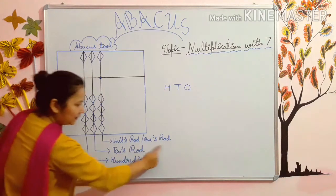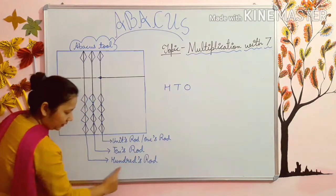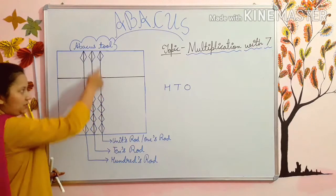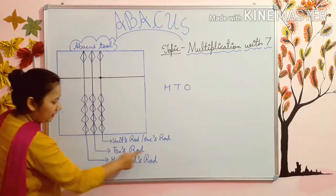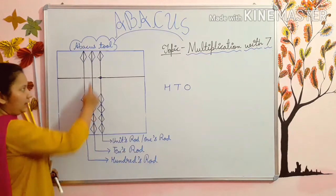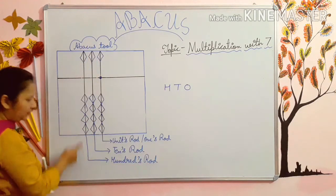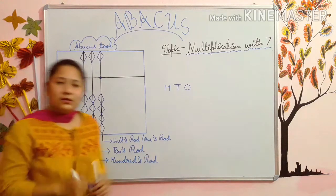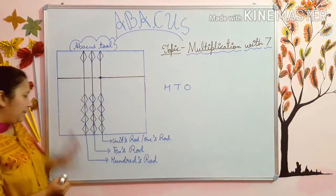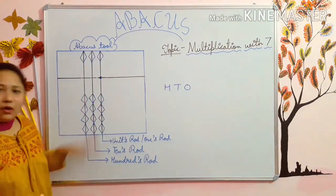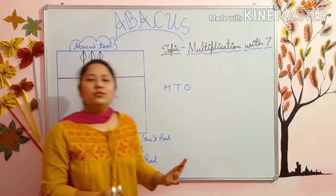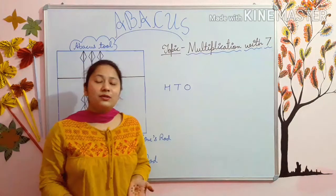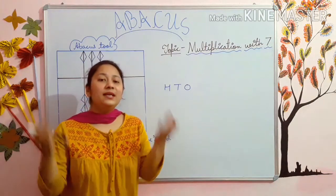See — one's rod, tens rod, hundreds rod. So, one's rod is this first one, tens rod is this second one, and hundreds rod is this third one. So kids, this Abacus tool we always use in our sums. It makes your sums very easy.